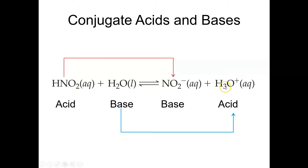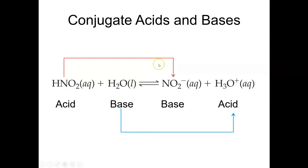We can identify two conjugate pairs here. Nitrous acid and nitrite are one pair — the difference between them is just an H⁺. The acid has it; the base doesn't. If you lose the H⁺ you become the base; if you add the H⁺ you become the acid. Similarly, water and hydronium are a conjugate pair: add an H⁺ to water and it becomes hydronium; remove an H⁺ from hydronium and it becomes water. These two species differ only by the absence or presence of an H⁺. So any Bronsted acid-base reaction contains two conjugate pairs, and one member of each pair is always going to be on either side of the arrow.